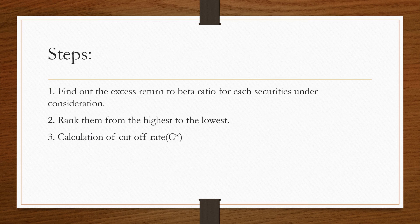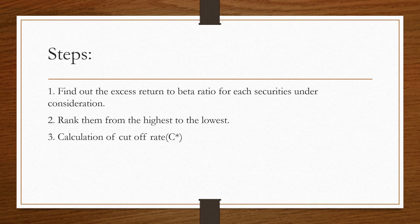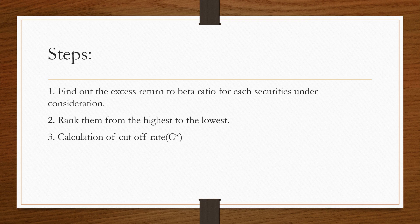There are certain steps for finding out the stocks to be included in the optimal portfolio. First step is finding out the excess return to beta ratio for each securities under consideration.